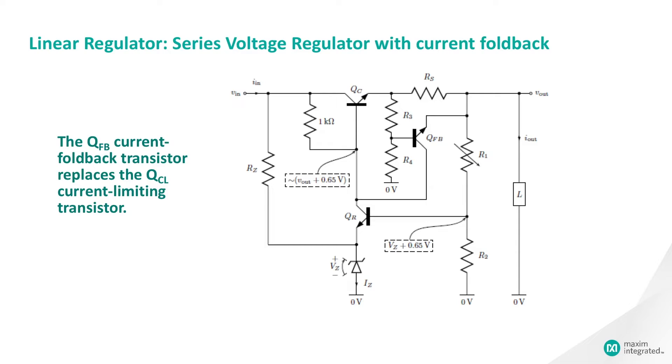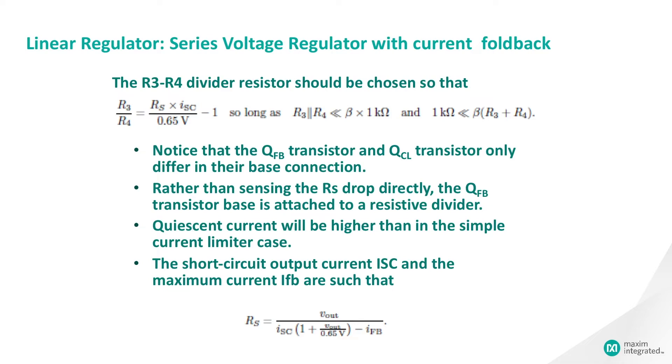This topology adds the current foldback transistor in the place of the QCL in the previous slide. This circuit maintains a constant Vout over a range of loads that require sufficiently small current. Notice that the QFB transistor and QCL transistor only differ in their base connection. Rather than sensing the RS drop directly, the QFB transistor base is attached to a resistive divider, and so it becomes active at a different stage than the QCL transistor current limit. Because the R3-R4 divider draws additional current, quiescent current will be higher than in the simple current limiter case.